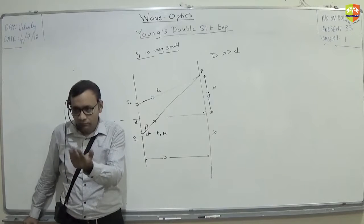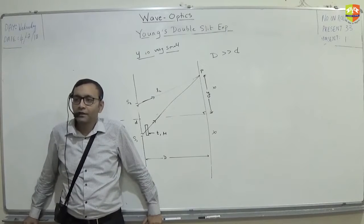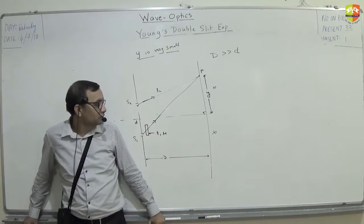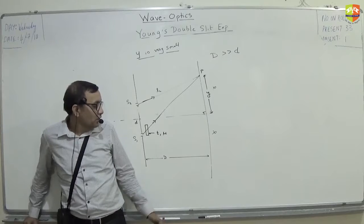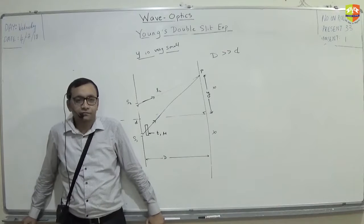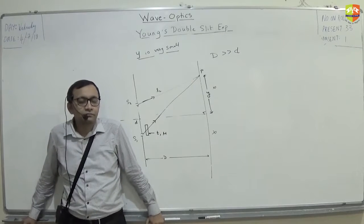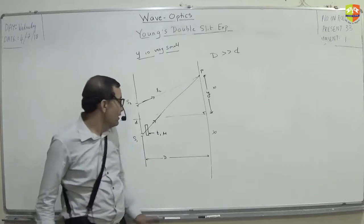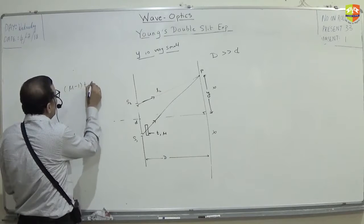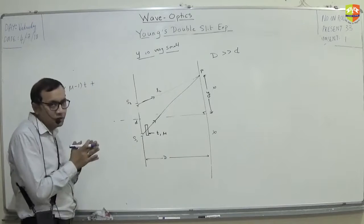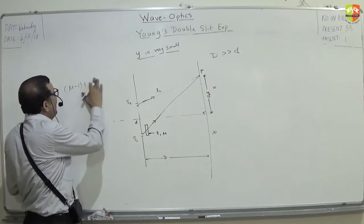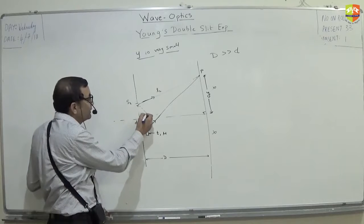Now tell me where is the location and how do you find it? The optical path difference has mu minus 1 into t, plus the actual path difference. Going back to basics, the actual path difference involves angle theta, and the path difference drops like d times y over D.